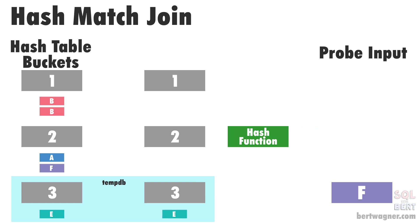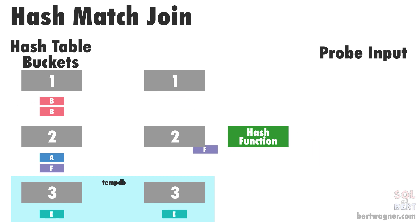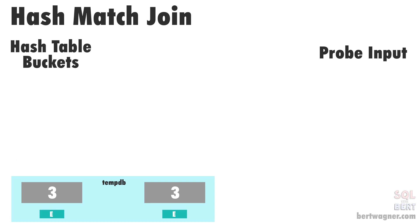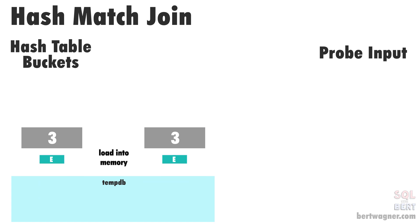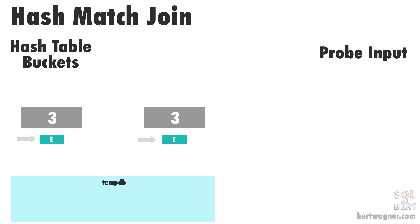Once all of the rows from the second probe input have been processed, SQL Server loads whatever's in tempDB back into memory and then continues doing the comparisons there. SQL Server can do the join in multiple phases by staging some of that data into tempDB and then loading it back into memory when space has been cleared up — that's what makes a hash match join so powerful.